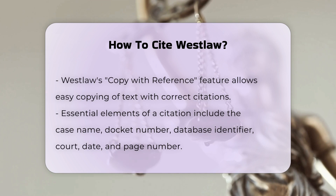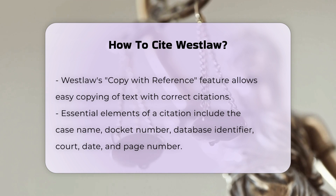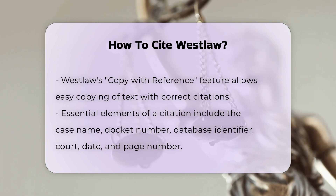Elements of a citation. A citation to a case on Westlaw should include the case name, the docket number if it is an unpublished case, the database identifier — e.g., WL for Westlaw — the court and date of the decision, and the page or section number if applicable.